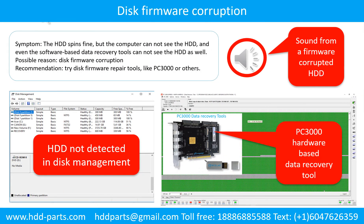Disk firmware corruption — second case. Symptom: the hard drive spins fine, but the computer cannot see the hard drive, and even software-based data recovery tools cannot see the hard drive. Possible reason: disk firmware corruption. Recommendation: try disk firmware repair tools like PC3000 or others. The following is the sound from a hard drive which experienced disk firmware corruption — it sounds like a good hard drive, but the computer cannot detect it.